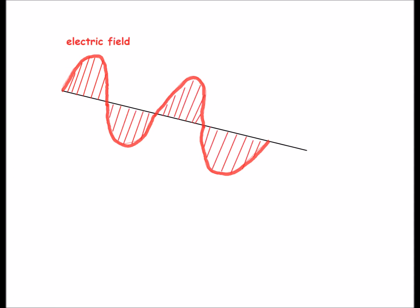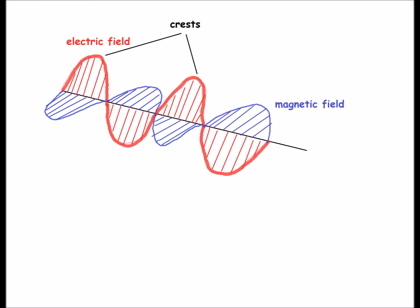Each light wave is a disturbance of electric and magnetic fields that travels in the form of a wave. Each light wave has a series of high points known as crests, where the electric field is highest, and a series of low points known as troughs, where the electric field is lowest.